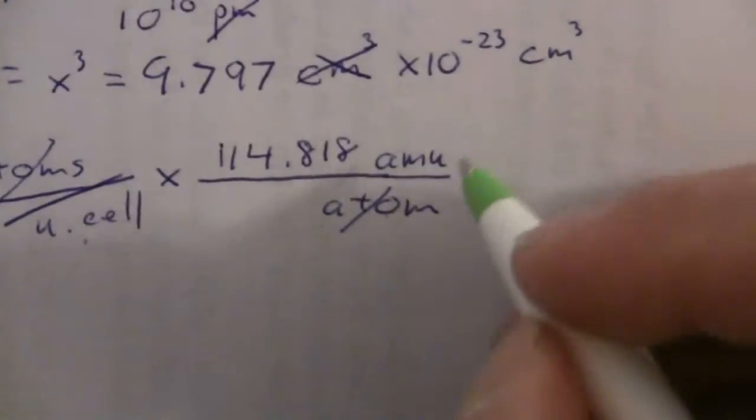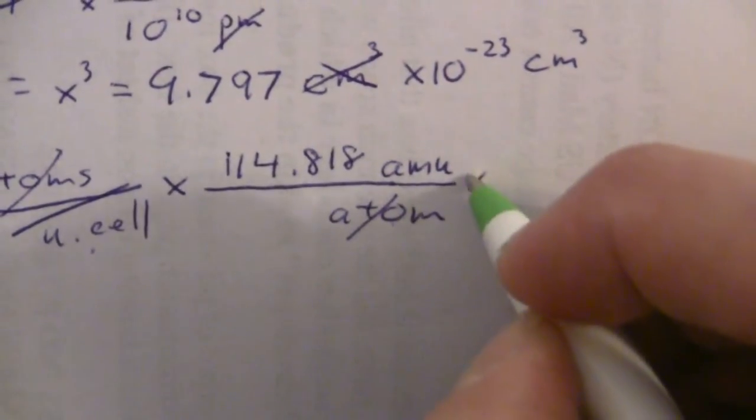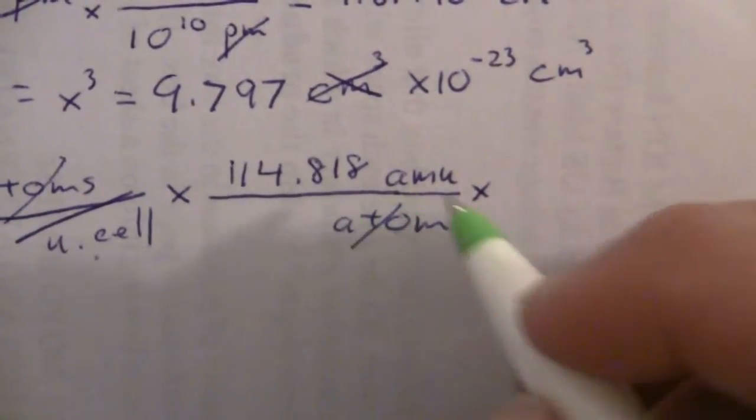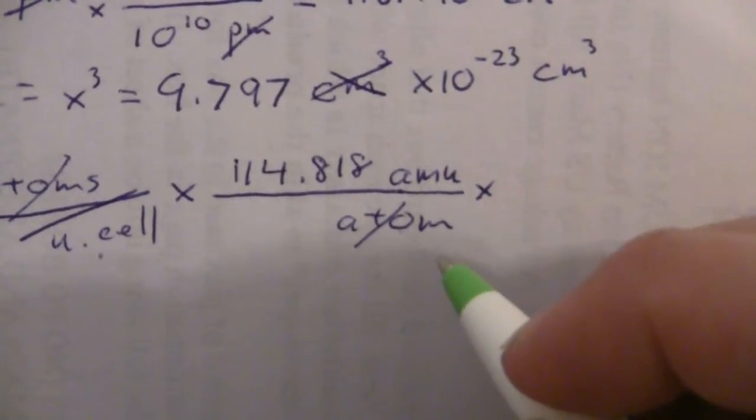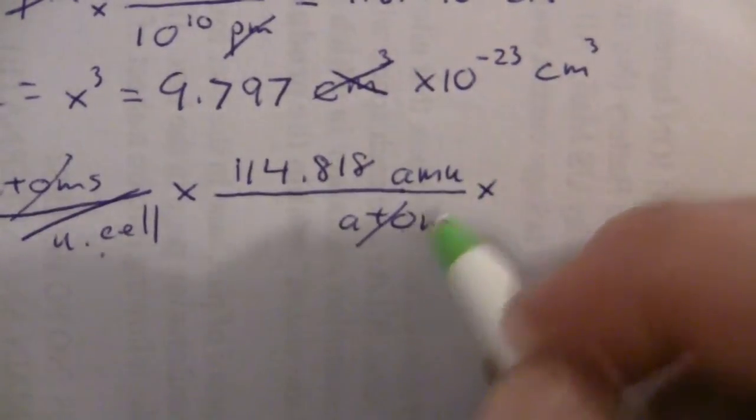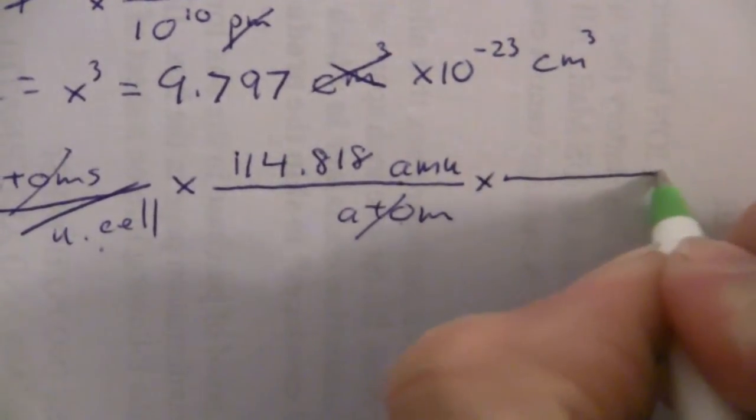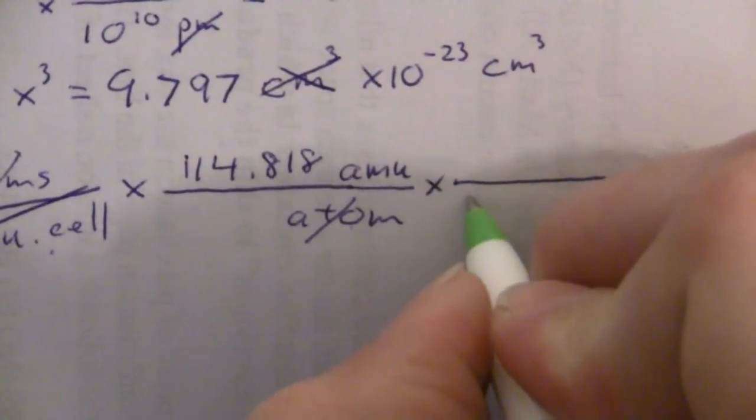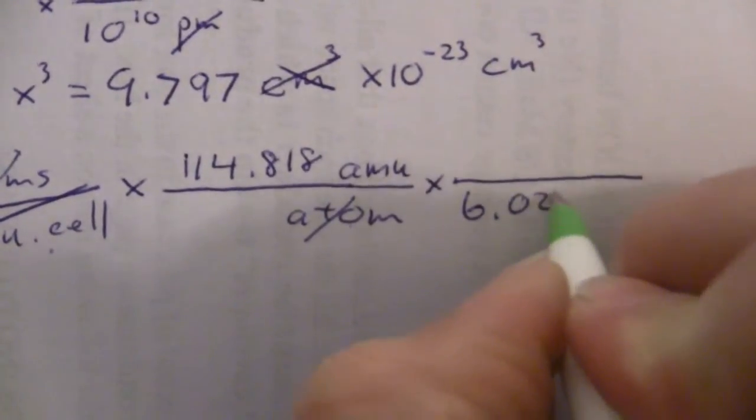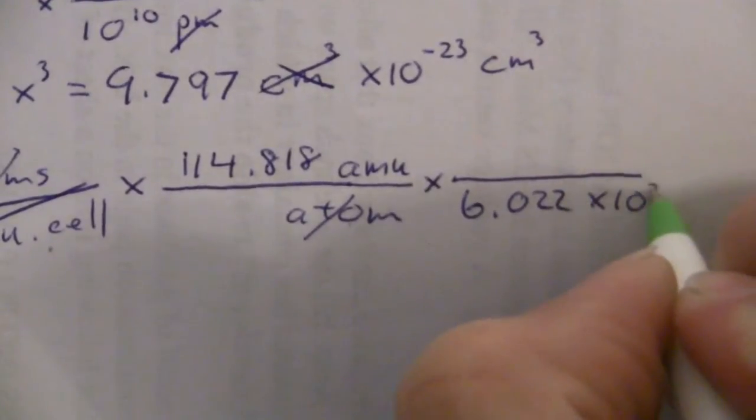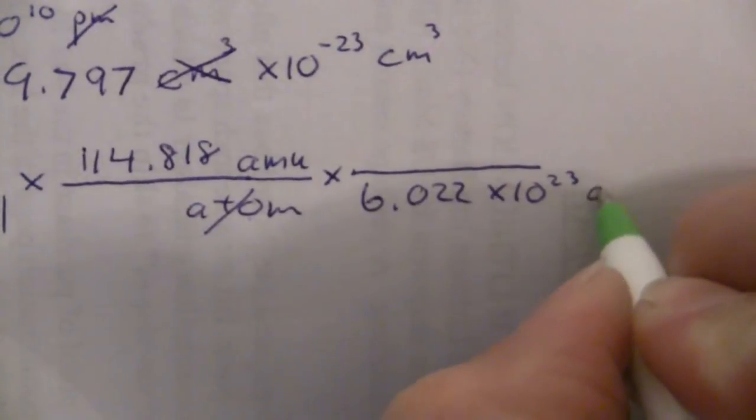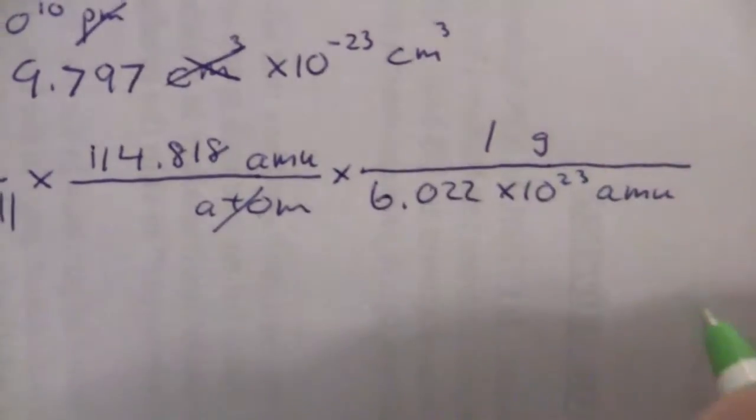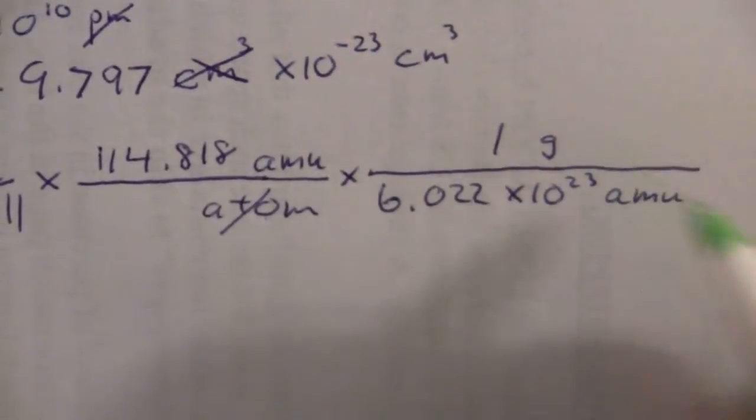Well, there are 114.8 grams per mole, or amu per atom, so my factor here is Avogadro's number. So we're going to put that down here: 6.022 times 10 to the 23rd amu per gram. So this is one way to do it.